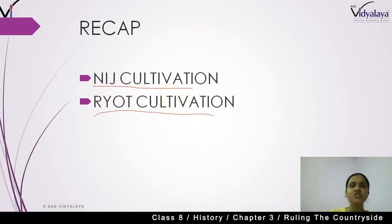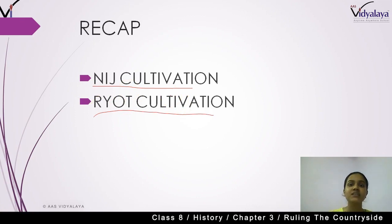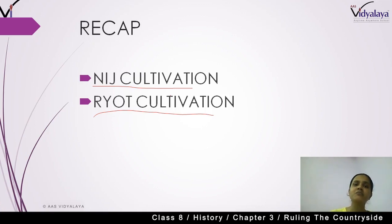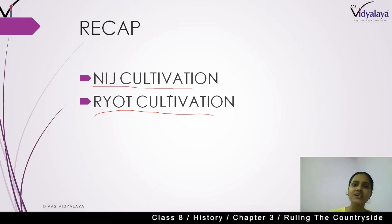In ryot cultivation, it was a system in which there was a forced contract between the company and the ryots or cultivators. The peasants found it very difficult because they were forced to sign an agreement under which they had to produce indigo on 25% of their land. Those who had to produce their own crops were not able to do so. The payment after the crop was produced was very less, and the cycle of loans never ended. Both types of indigo cultivation were quite oppressive for the peasants.